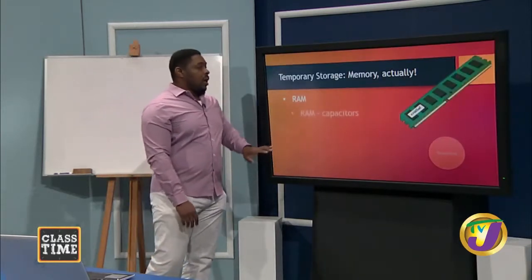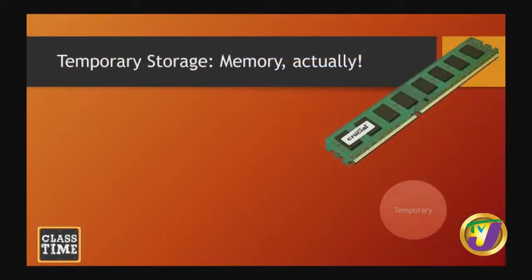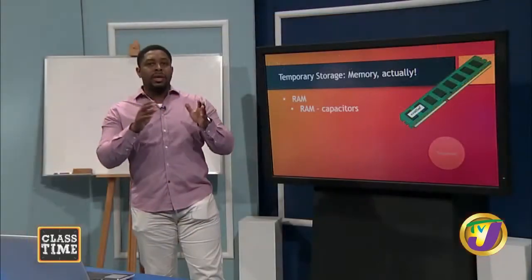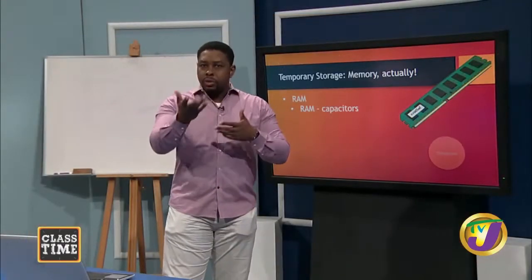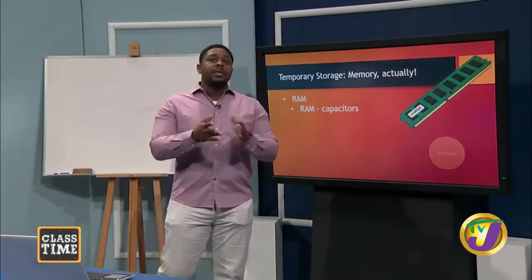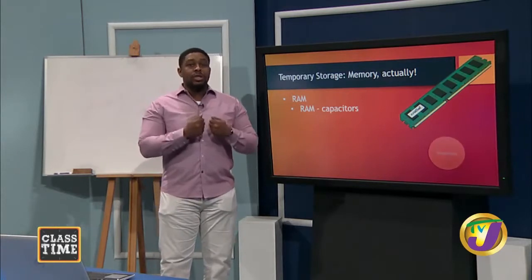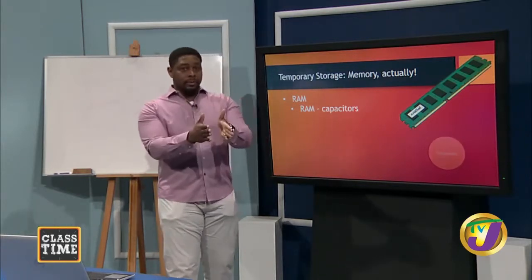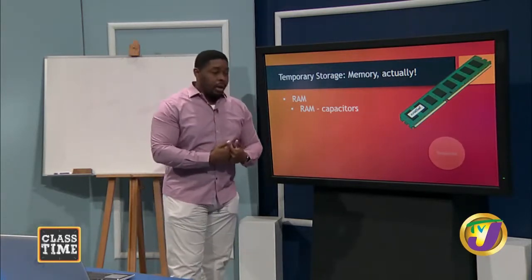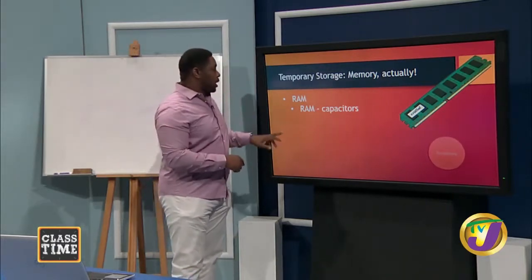Very early forms of RAM came in the form of capacitors. Those of you who do physics may know that capacitors store a charge — and that is exactly what this type of RAM used to do. We call it static RAM because as long as you store something there, it just stayed there. Then developments changed and we started to use something called dynamic RAM.